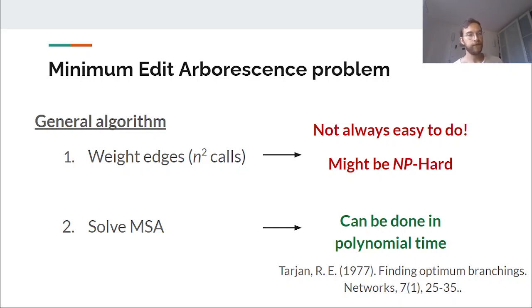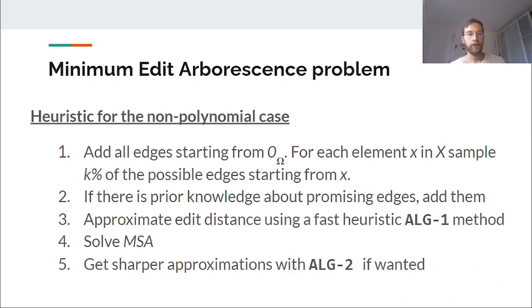For those cases where the bottleneck is important, we present a modification of the first algorithm. This has some changes. So the first modification tries to control the density of the graph, reducing the number of edit paths to compute. We do this by sampling a percentage of neighbors for every element of the collection instead of having the complete graph.